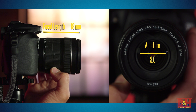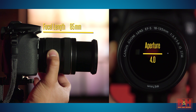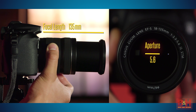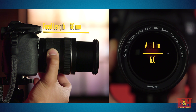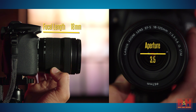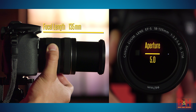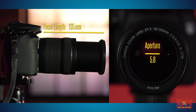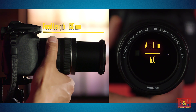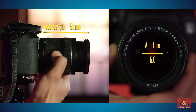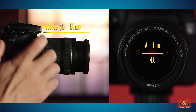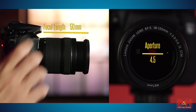Sometimes you'll hear a zoom lens called something like an 18-135 f3.5-5.6. That means the lens zooms from 18mm to 135mm, and the maximum or widest aperture of f3.5 is going to be at the wide end of your zoom — that 18mm range. And then when you zoom in to 135mm, your maximum aperture is going to be f5.6. If your zoom is somewhere in between 18 and 135, your maximum aperture will be between f3.5 and f5.6.